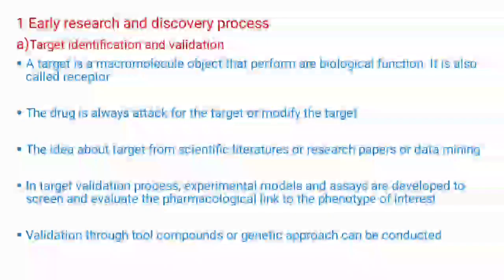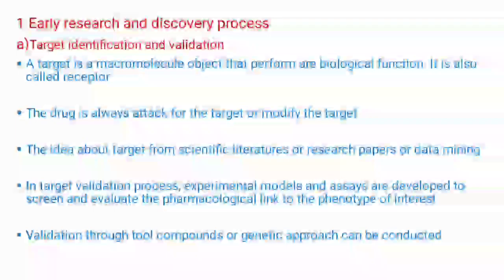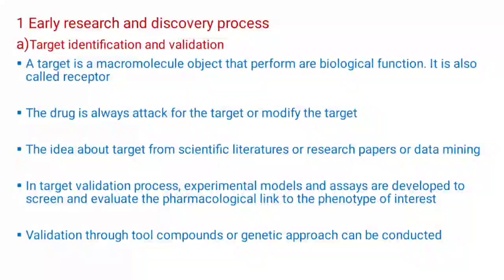First, the early research and discovery process — we discuss target identification and validation. A target is a macromolecular object that performs a biological function, also called the receptor. Our newly developed drug always attacks or modifies the target. The idea about a target comes from scientific literature, research papers, or data mining. In target validation, experimental models and assays are developed to screen and evaluate the pharmacological link to the phenotype of interest. Validation through tool compounds or genetic approaches can be conducted.